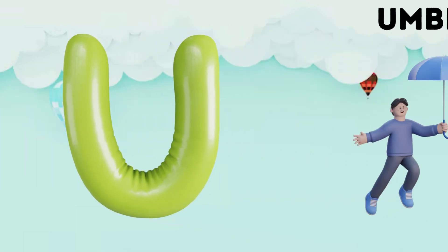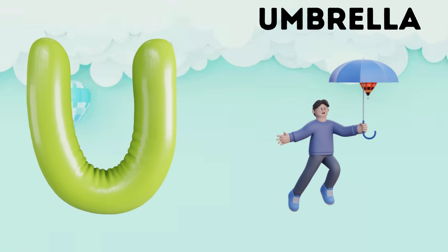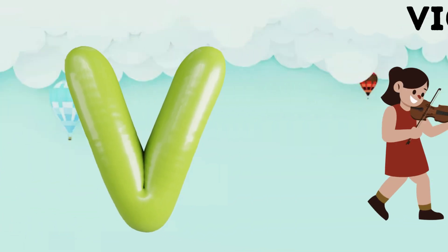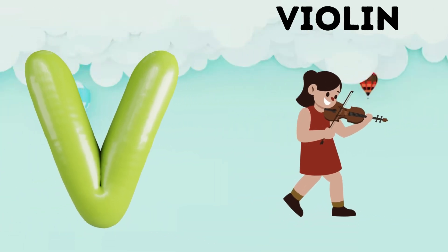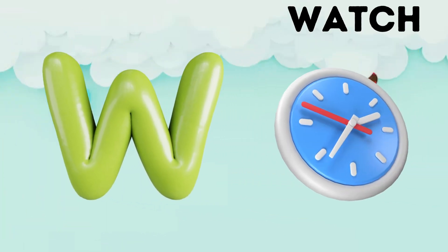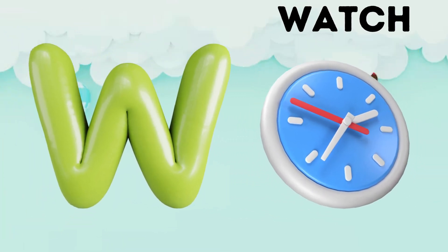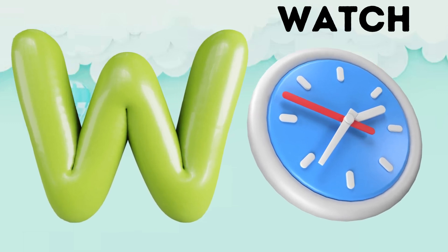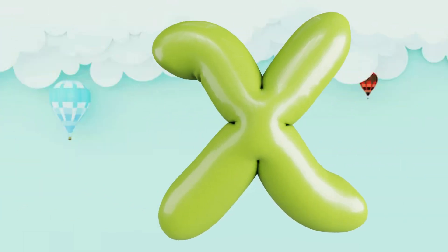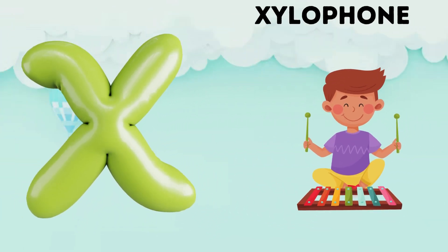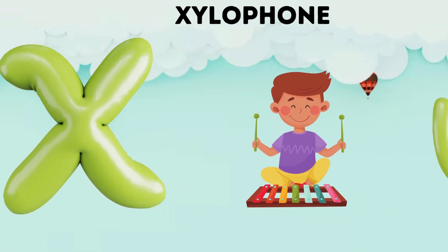U is for umbrella, u-u-umbrella. V is for violin, v-v-violin. W is for watch, w-w-watch. X is for xylophone, x-x-xylophone.